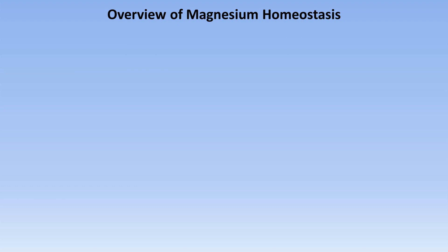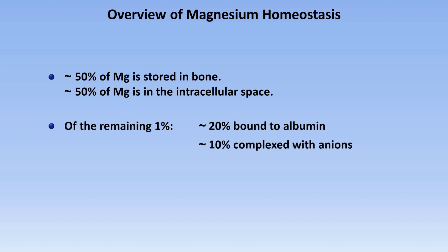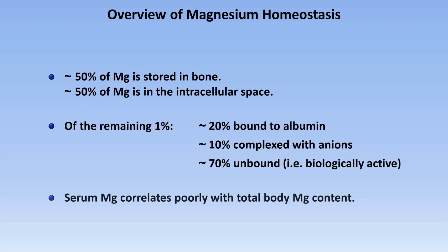Before discussing pathology, let me start with an overview of normal homeostasis. Of the magnesium in the body, about 50% is stored in the bones, and about 50% is in the intracellular space. There's actually about 1% left over which is in the blood. Of that 1%, 20% is bound to albumin, 10% is complexed to anions like phosphate, and 70% is unbound, which is the biologically active form. The consequence of only a tiny fraction of the body's magnesium being present in the blood is that serum magnesium levels correlate poorly with total body magnesium content.